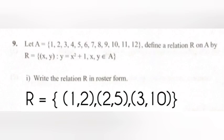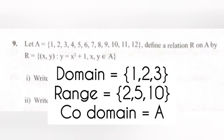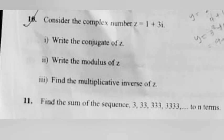Answer: Part i: R = {(1, 2), (2, 5), (3, 10)}. Part ii: Domain = {1, 2, 3}, range = {2, 5, 10}, codomain = A.